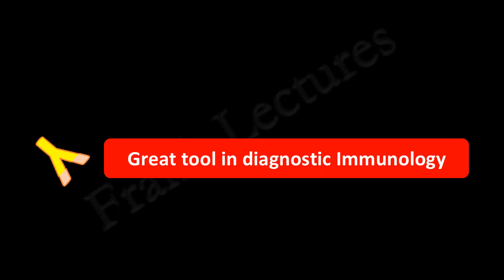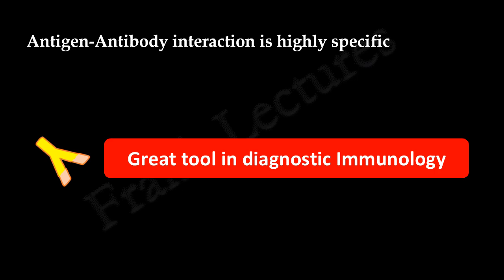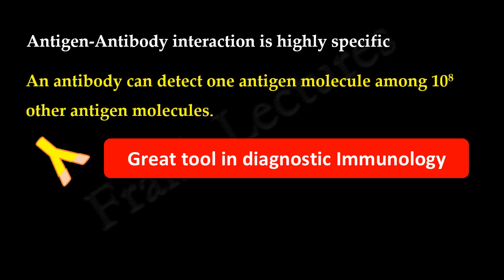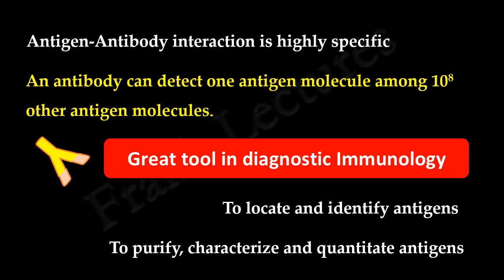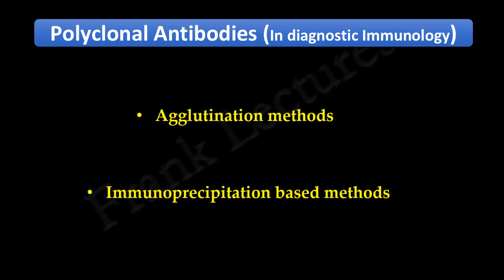Antibodies are a great tool in diagnostic immunology because the antigen-antibody interaction is highly specific. An antibody can detect one antigen molecule among 10 to the power of 8 other antigen molecules, and are used to locate and identify antigens. Polyclonal antibodies are useful in agglutination and immunoprecipitation-based techniques, because these techniques involve large antigen-antibody or immune complex formation, and polyclonal antibodies provide multiple ways of binding to the target antigens.